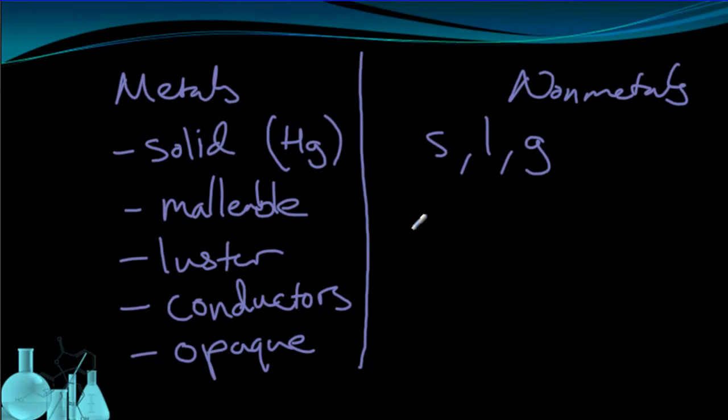Many of the non-metal defining properties are kind of related to what you would see on the metal side in that they're pretty much opposites. For example, non-metals are not lustrous. They're actually dull. They're not shiny.